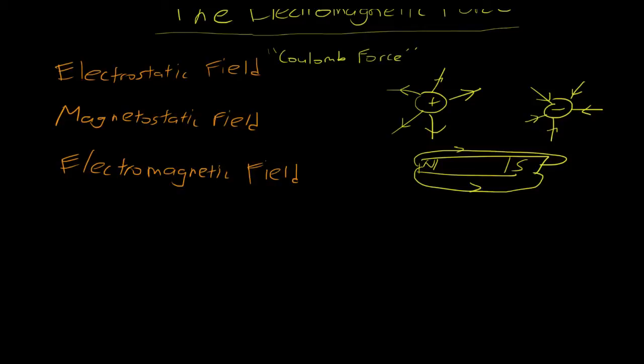So basically, the electrostatic field when moving generates the magnetic field, and a varying magnetic field generates an electric field. So when these two fields complement each other, they generate the electromagnetic field.